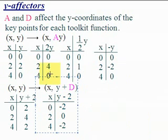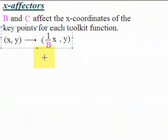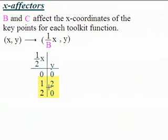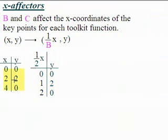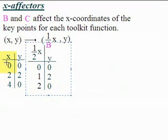That's a more specific look at A and D as Y-effectors. Now we have X-effectors: B and C. This is where a lot of students make mistakes — be careful. The X-effectors do the opposite of what you think they would do. If the B value is 2, it's going to cut the X values in half instead of expanding the graph horizontally as you might expect.